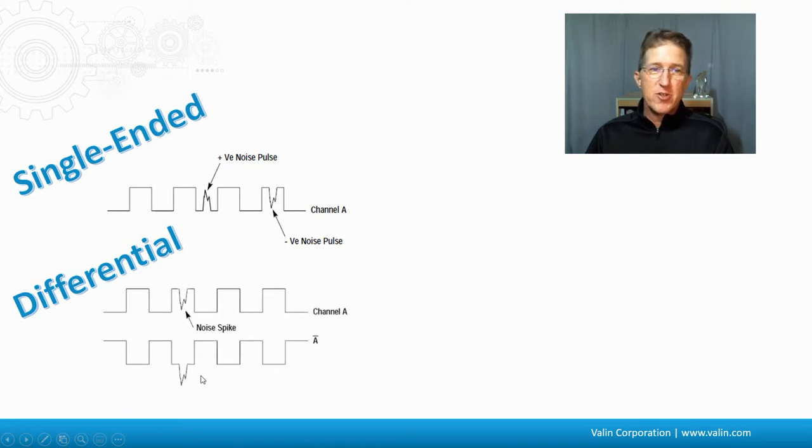So if we see any electric noise, it's going to look the same on both of those. These two wires are typically wound around each other in a pair.